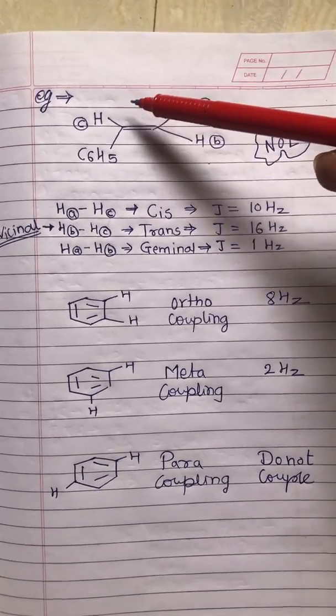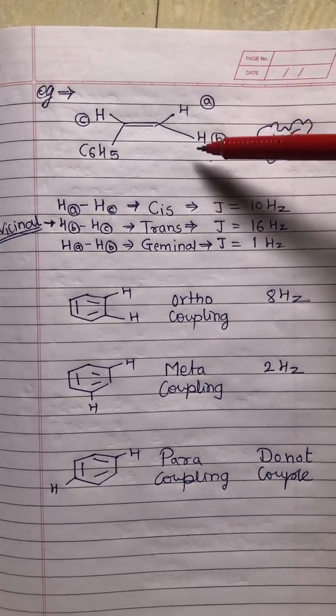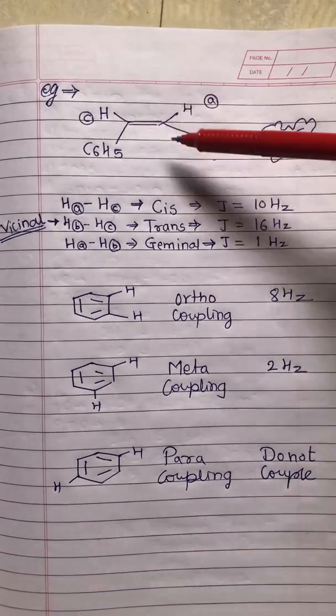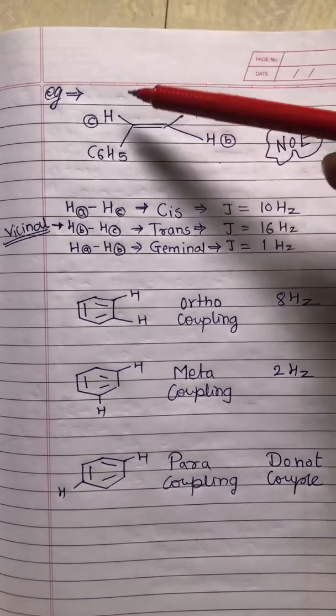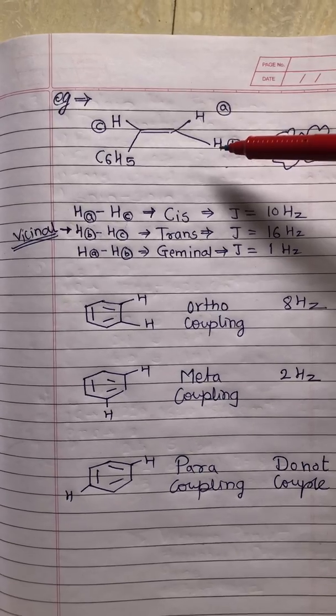Now Hb and Hc are trans to each other - we can also say those are vicinal - and their value is 16 Hertz.